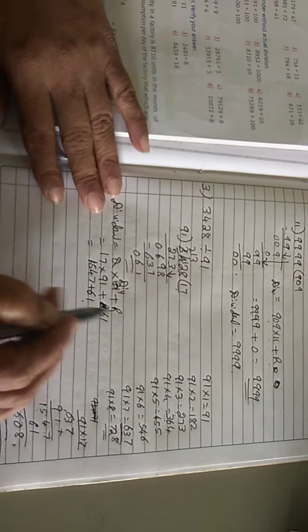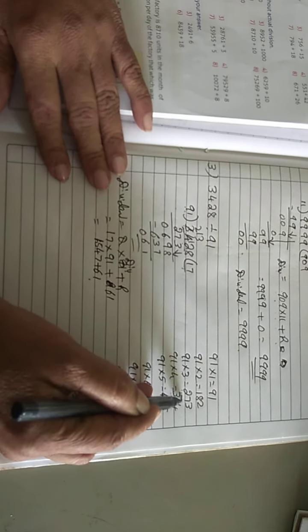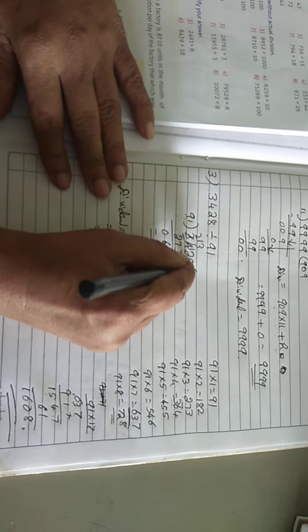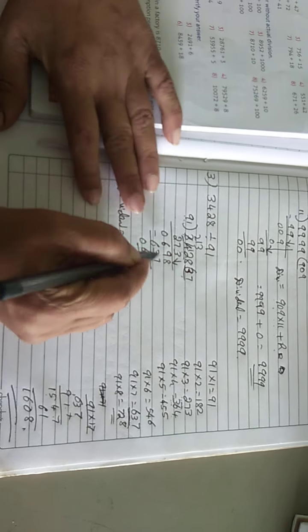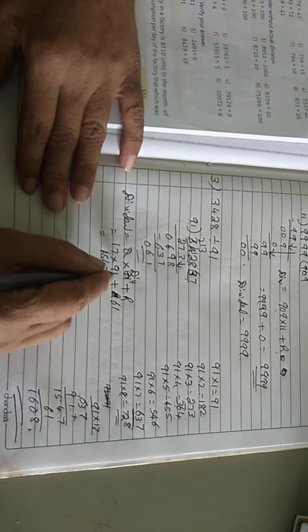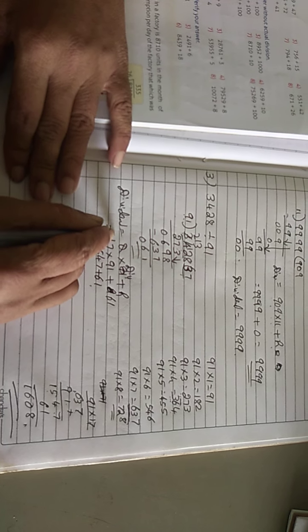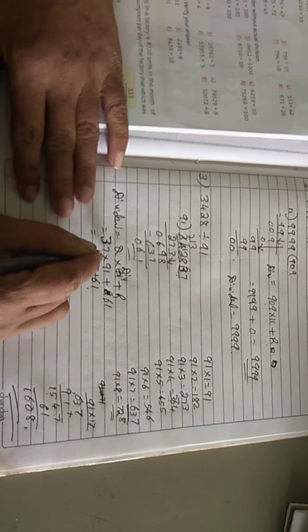Sorry children. See here: 91 3 is 273. 91 3 is 273. And then you do the subtractions, you will get 90, 37. Quotient is 37.